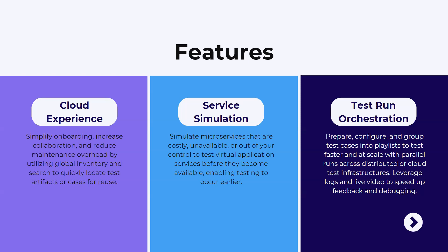The service simulation feature allows you to simulate microservices used by your application. Setting up a test environment for all microservices can be costly or unavailable, and it may be out of your control. Using TTA, you can build and deploy your own simulated microservices and APIs — the back end of your application — isolating your test environment and enabling testing from the very beginning without waiting for the application to be fully ready.